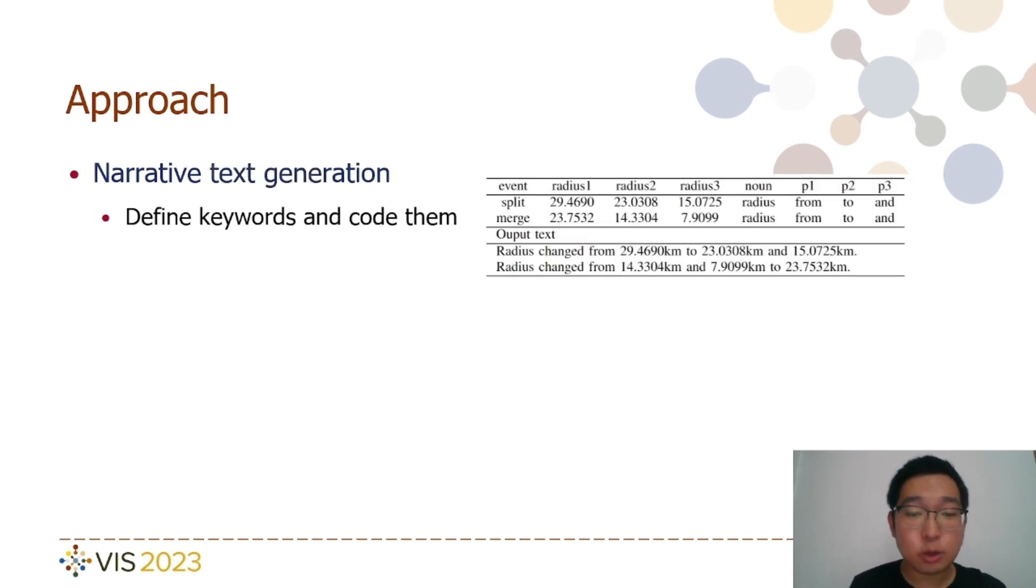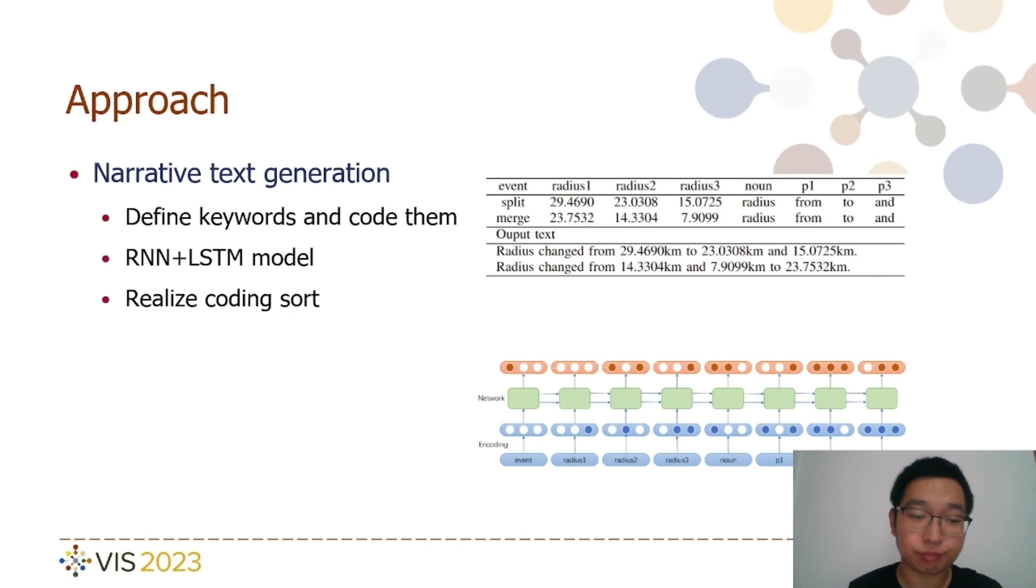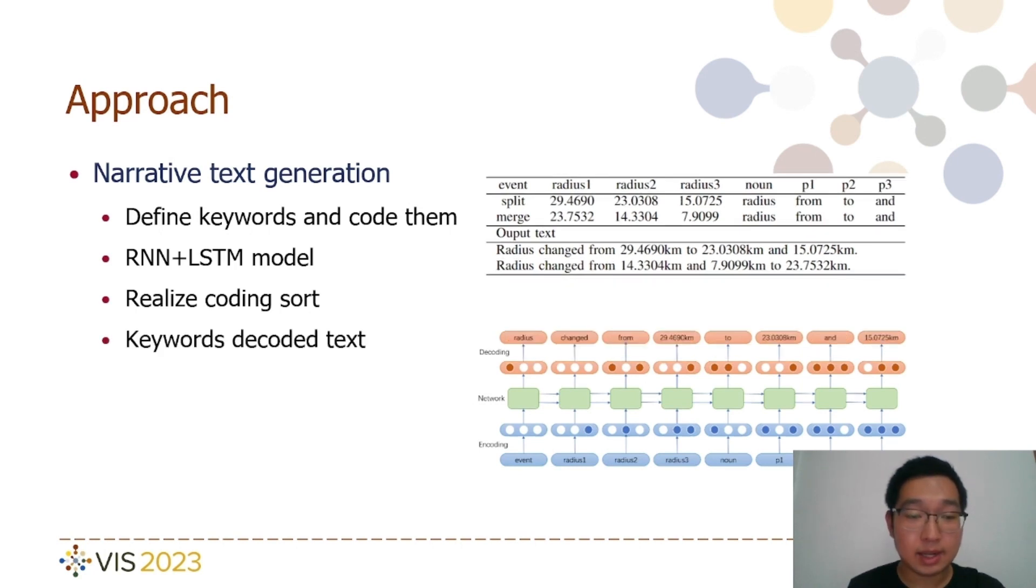In the generation of narrative text, we primarily employ the encoding and decoding approaches based on RNN and LSTM. Initially, we define RNN and LSTM model and train it to learn the encoding order for the keywords. Lastly, the text is decoded using the learned keywords.